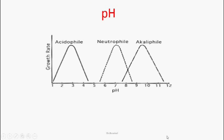Depending upon pH, there are three varieties of bacterial organisms. Organisms that grow at acidic pH (1 to 4.5–5) are called acidophiles. Those that grow at neutral pH (5.5 to 8–8.5) are called neutrophiles. Organisms that grow at high alkalinity (7.5 to above pH 11) are called alkaliphiles.